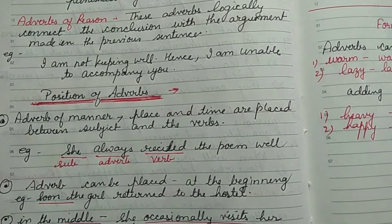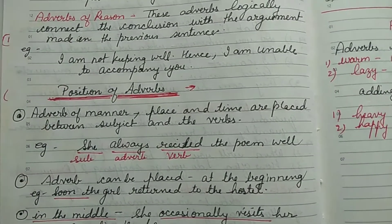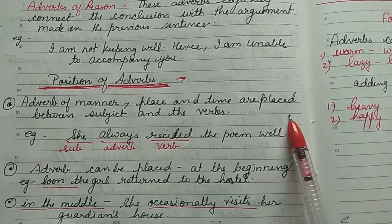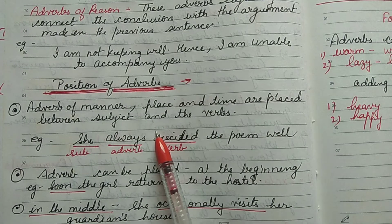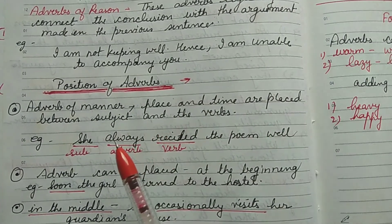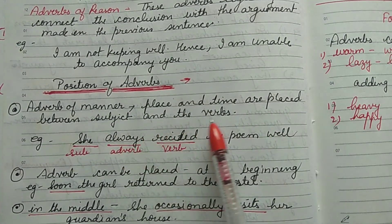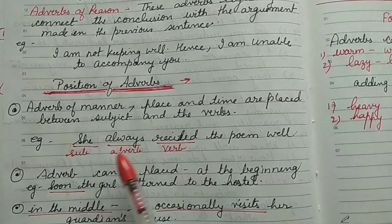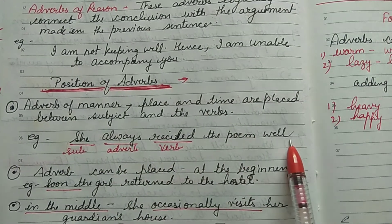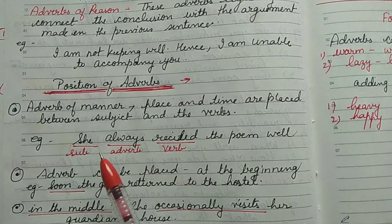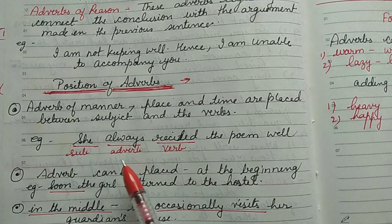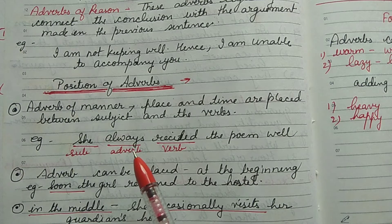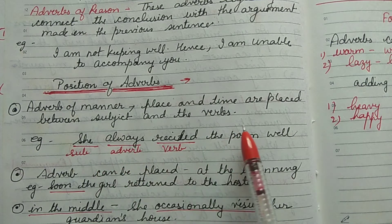Now, regarding the position of adverbs: adverbs of manner, place, and time are generally placed between the subject and the verb. For example: 'She always recited the poem well.' Here 'she' is the subject, 'recited' is the verb, and 'always' is placed in between — this is how such adverbs are positioned.